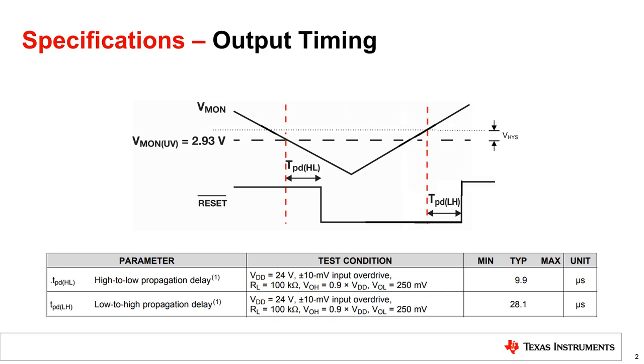When Vmon crosses Vmon UV plus hysteresis, TPDLH will be 28.1 microseconds. Likewise, it means the supervisor will take 28.1 microseconds for its reset output to change from a low logic level to a high logic level.